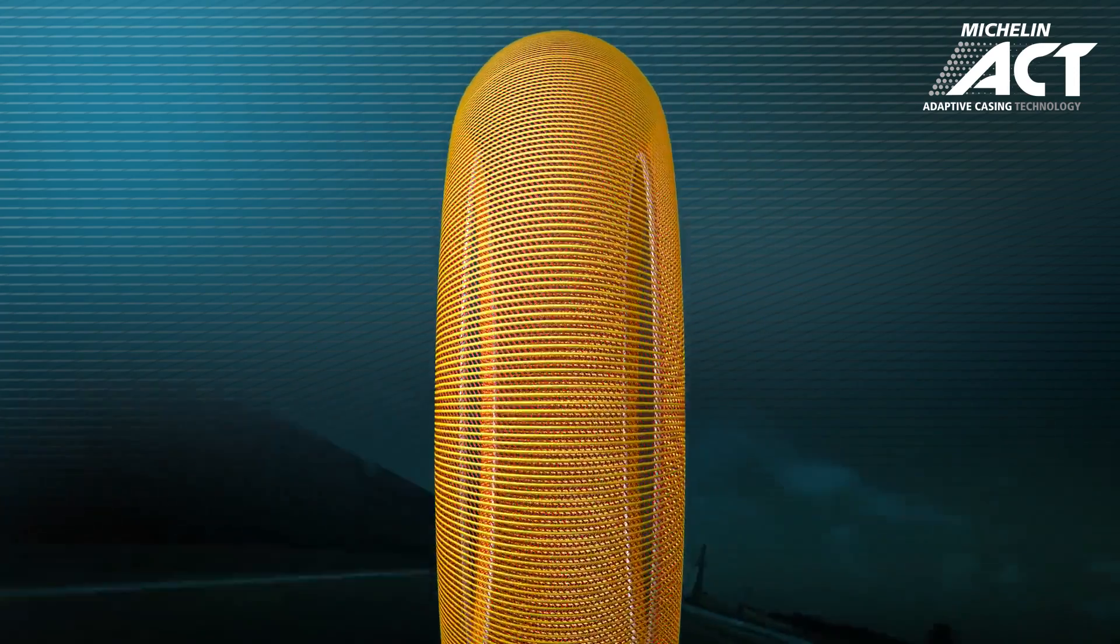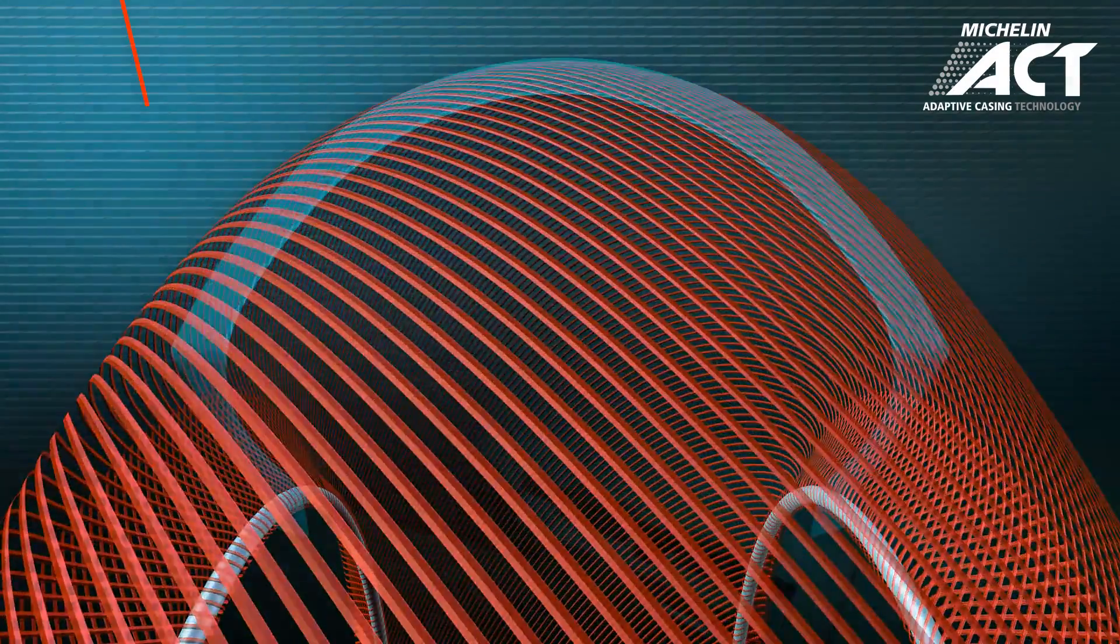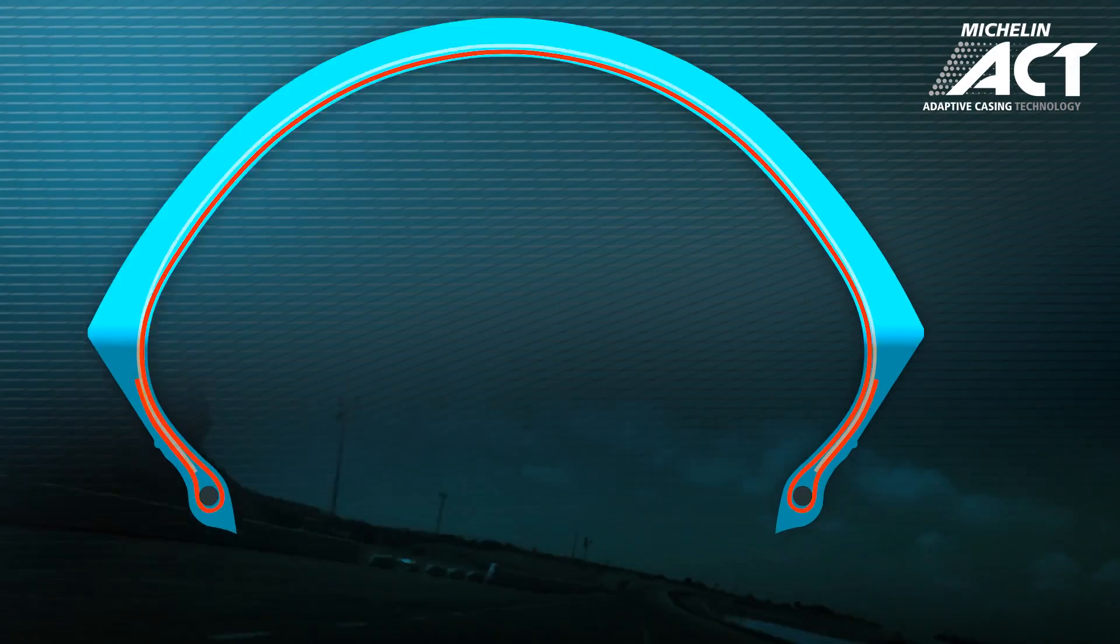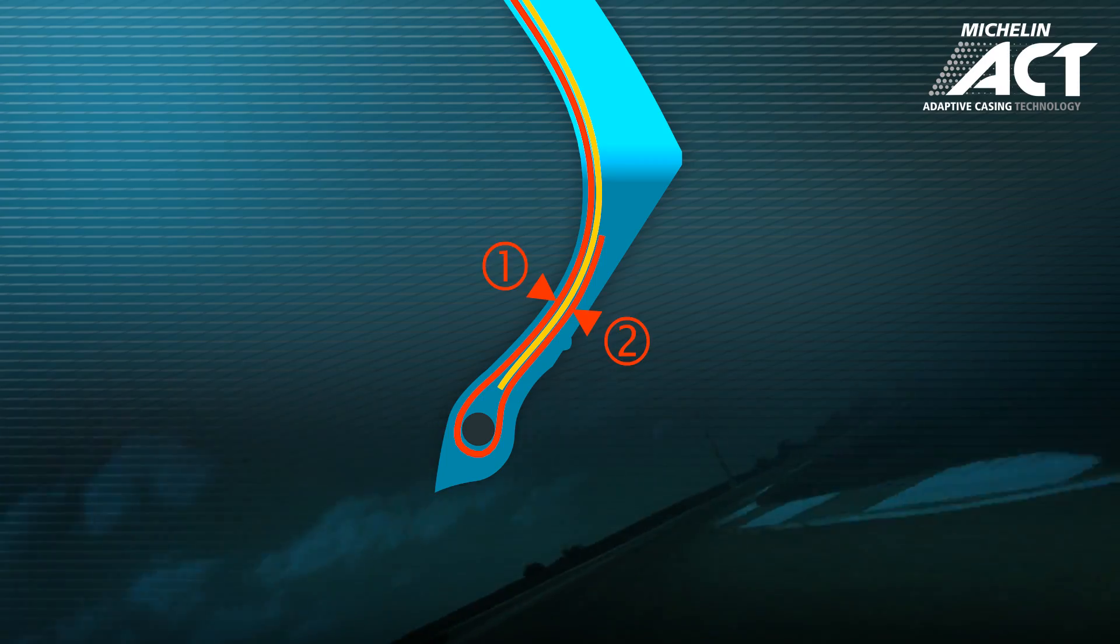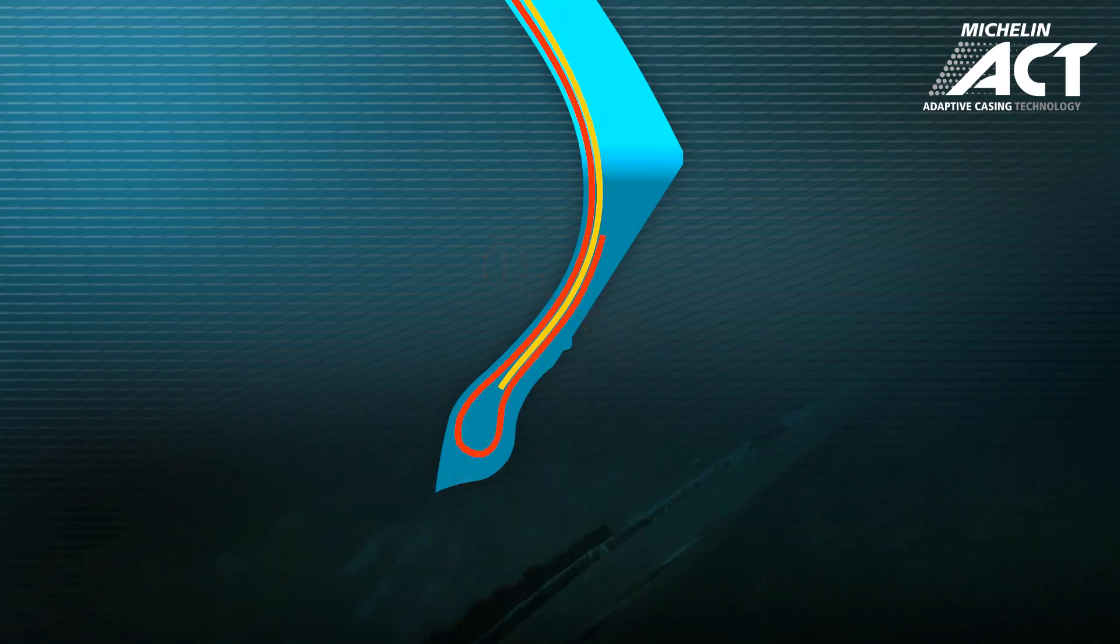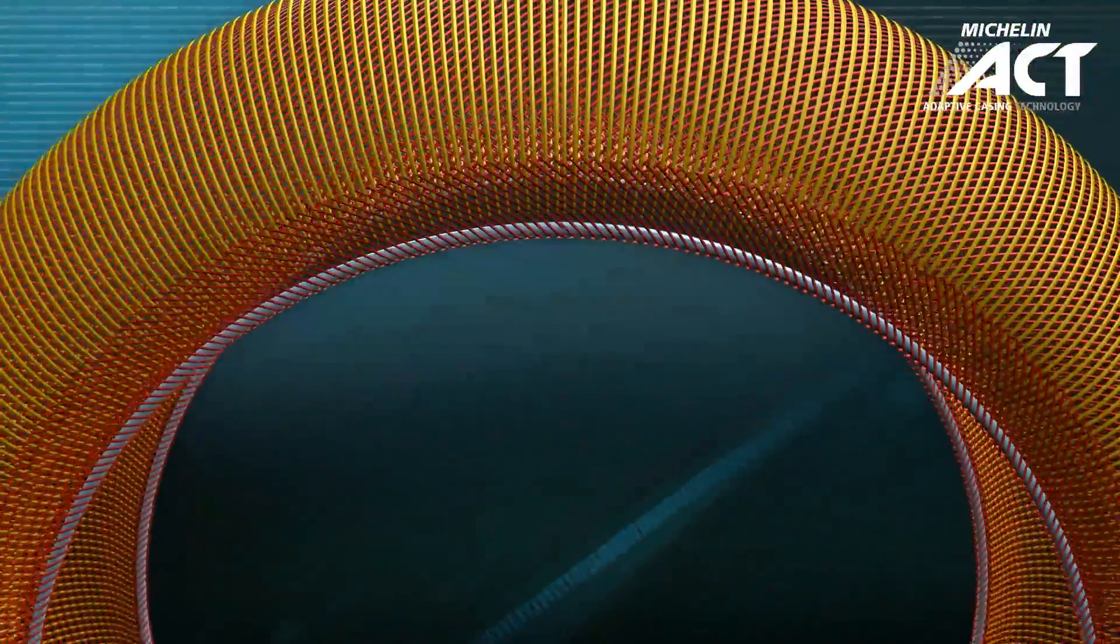At the same time, the first ply wraps around the beads and folds up over the sidewall to enclose the second ply. As a result, the sidewall's construction features three cord plies which form a triangulated structure that is resistant to deformation.